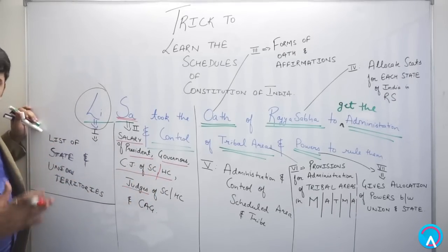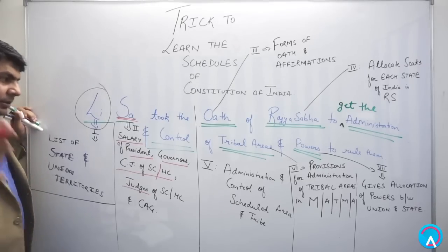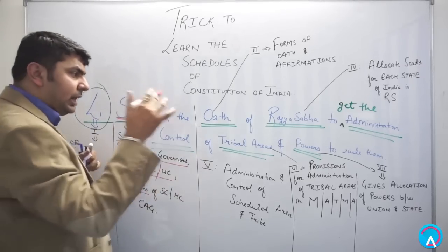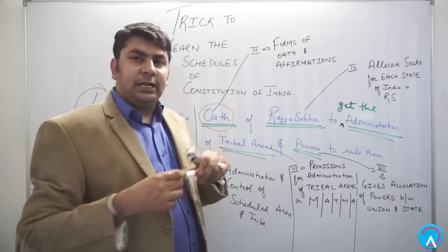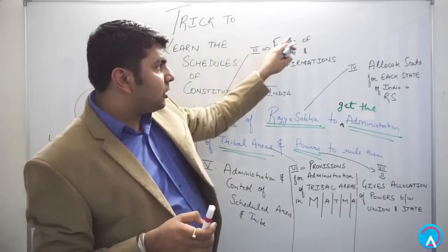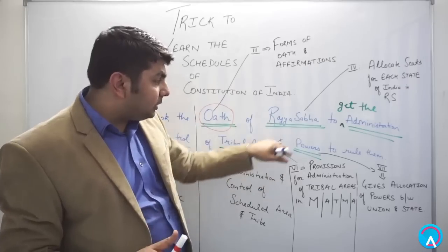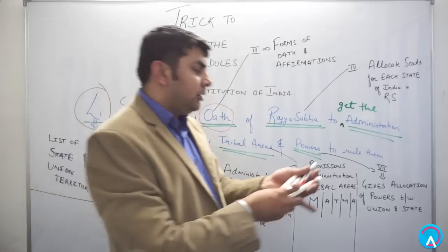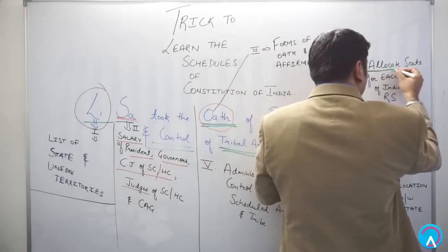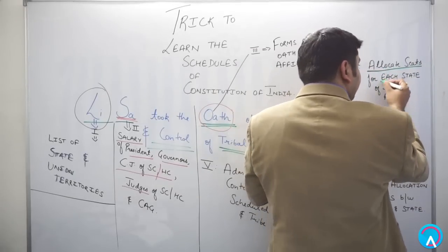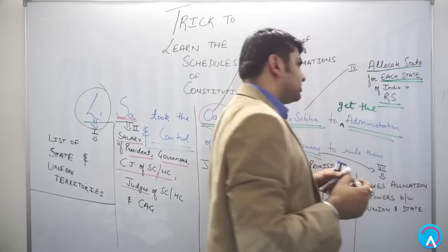The third schedule comes from 'oath' — it is the Forms of Oaths and Affirmations. The fourth schedule comes from 'Rajya Sabha' — it deals with the allocation of seats from each state of India in Rajya Sabha.